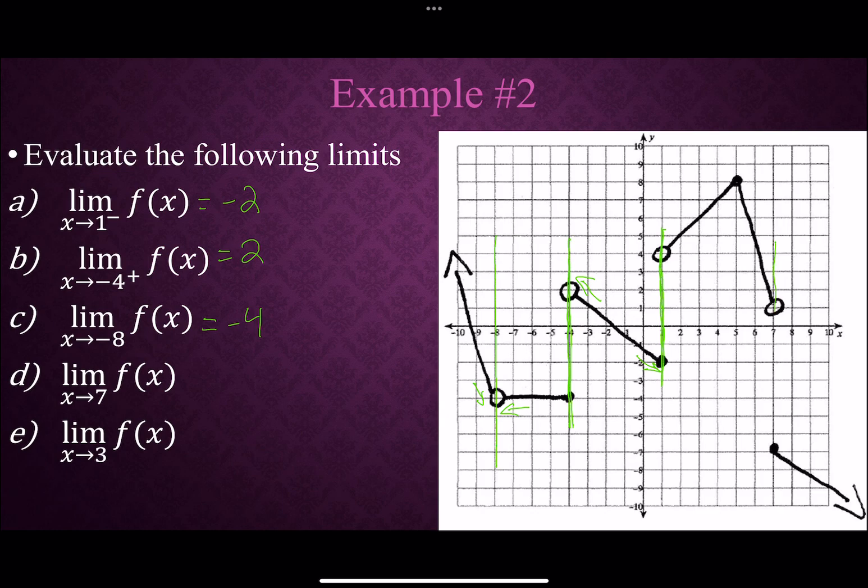All right, at 7, there's a jump there. There's that gap, and since we want both sides, they're not converging together at 7. That would be does not exist. And then finally, 3 does not have a hole or a gap or anything like that. It doesn't even have a point. But it's part of the line, so we can just draw our own point there. And we can see they're converging from left and right sides together at 6.